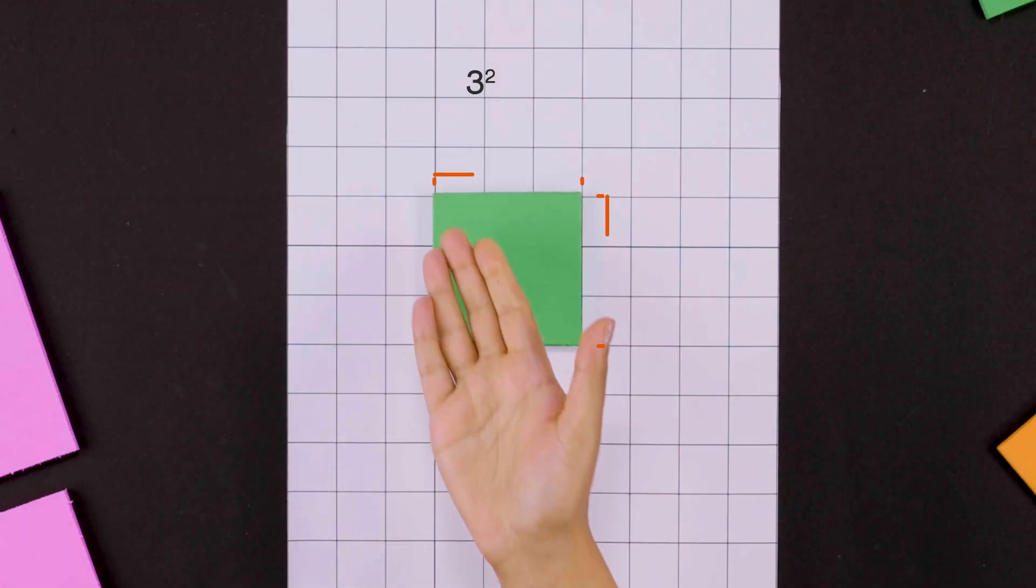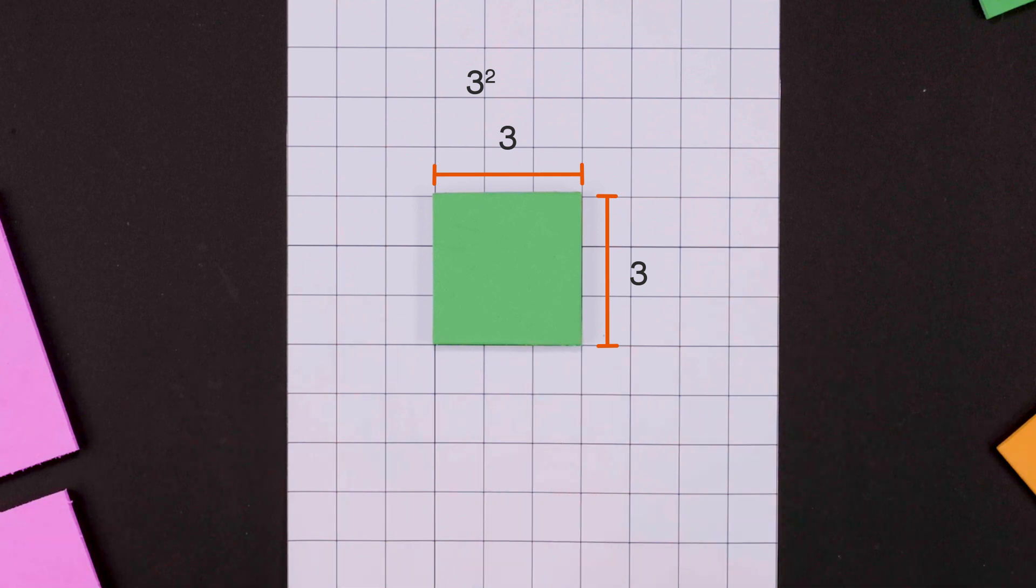But where does this formula come from? Let's see. Thinking geometrically, the square of any number, say 3 squared, is the area of a square with side 3. The area of this square is 9 square units which equals 3 squared.